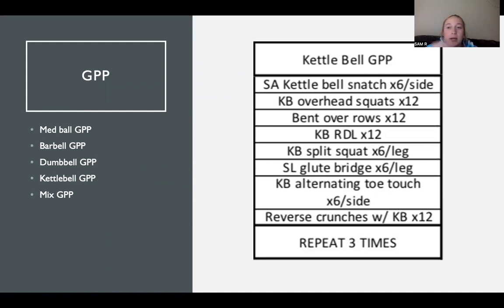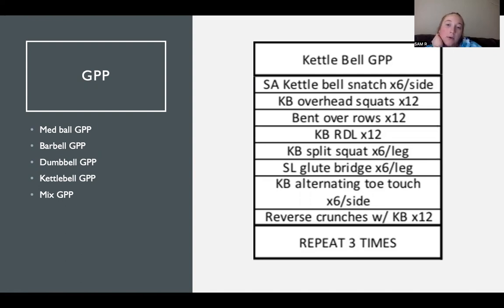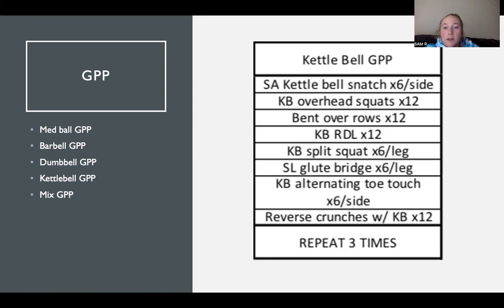The GPPs include a med ball GPP, barbell GPP, dumbbell GPP, kettlebell GPP, and a mixed GPP. For example, the kettlebell GPP starts with a power movement, moves to an overhead squat for hip and ankle stability, and works through a full body sequence repeated three times. These five GPPs are mixed into workouts across each week.